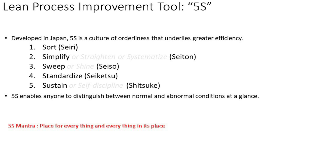The next tool is called 5S, developed in Japan. 5S is a culture of orderliness that underlies great efficiency. The five steps are: sort, simplify, sweep or shine, standardize, and sustain. 5S enables anyone to distinguish between normal and abnormal conditions at a glance. If you have implemented 5S you are working in a better workplace that will take less time to process things. I also have a separate video on 5S — link in the description. The 5S mantra is: a place for everything and everything in its place.